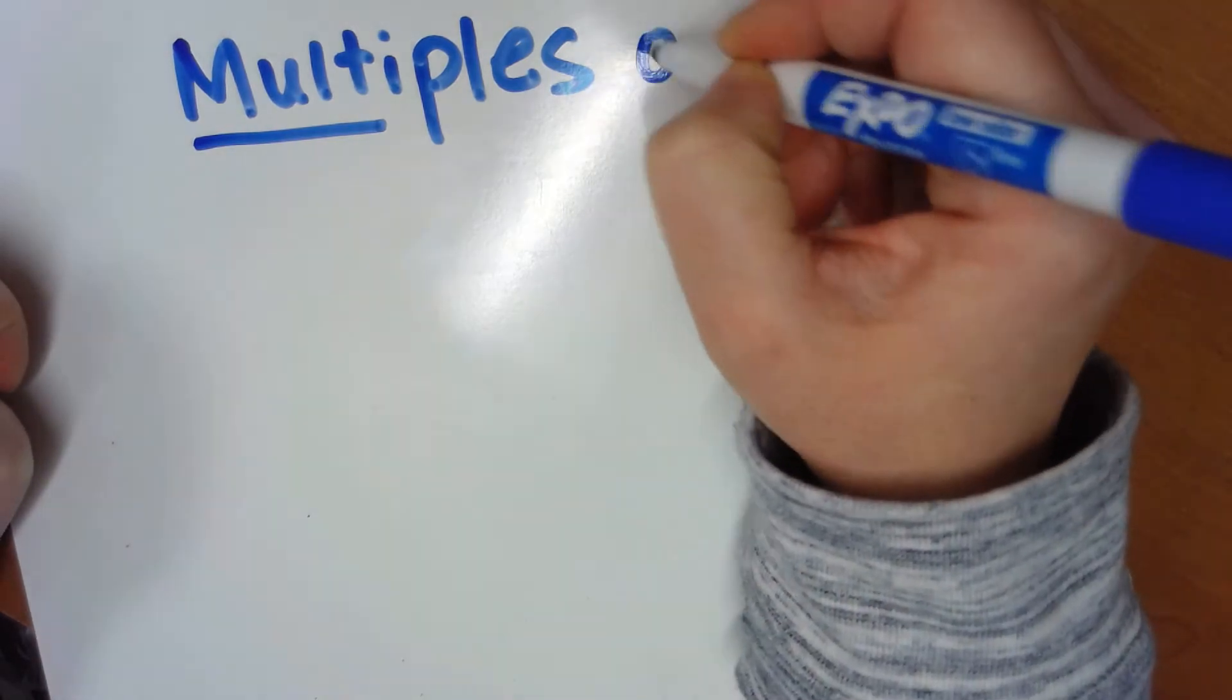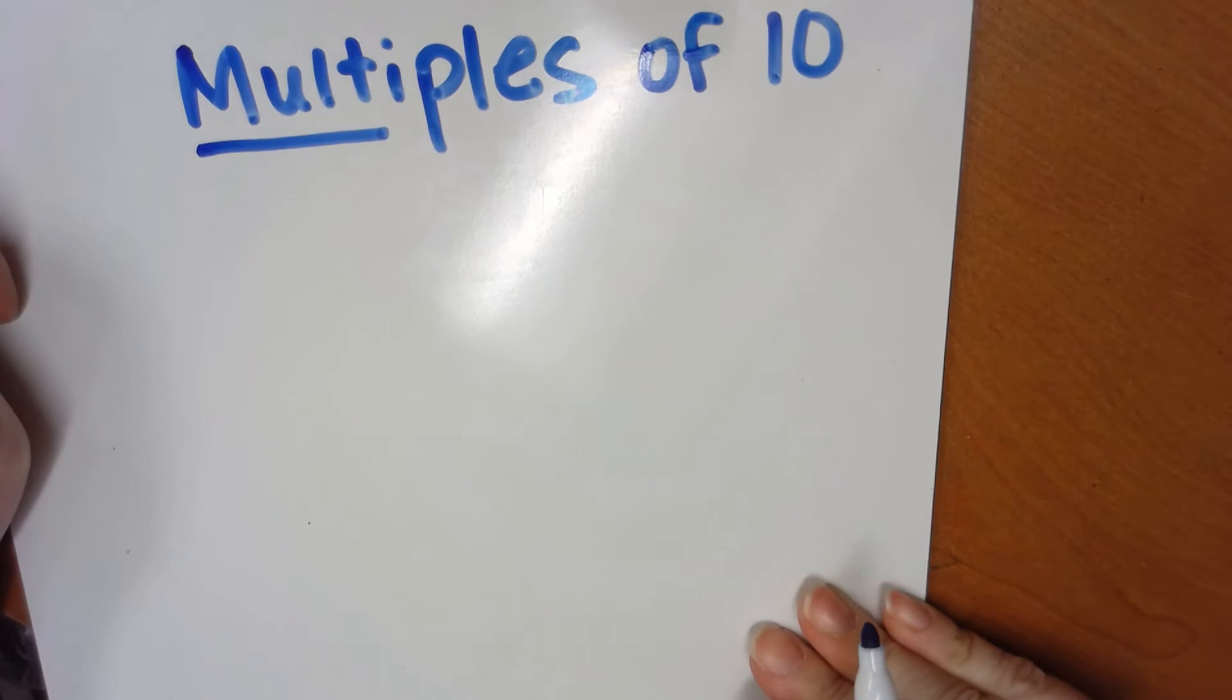In my previous example, we did the factors of 10. So here, let's take a look at the multiples of 10.